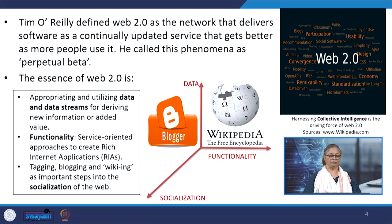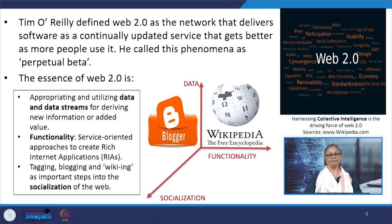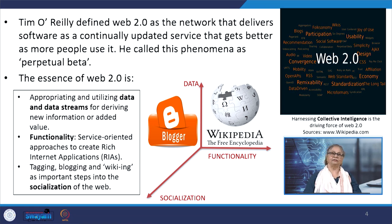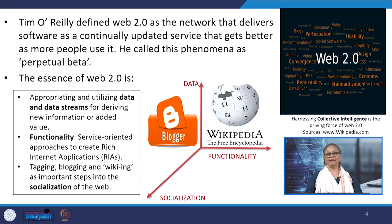Web 2.0 is a service-oriented approach to create rich internet applications known primarily as RIAs. At the same time, tagging, blogging, and wikis are known as important steps into the socialization of the web and have become immensely popular. O'Reilly defined Web 2.0 as a network that delivers software as a continually updated service that gets better as more people use it — he called this phenomenon 'perpetual beta'.